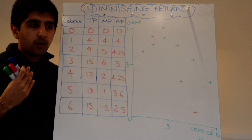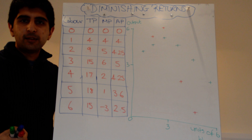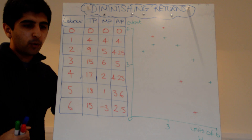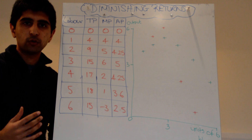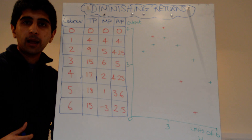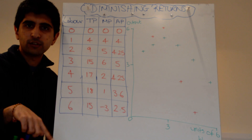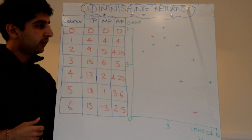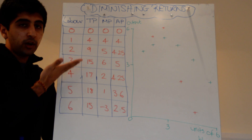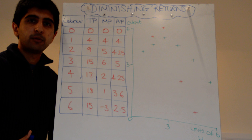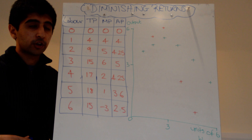We had a model firm that specialised in making paper aeroplanes. We had one table and three chairs — that was our fixed capital. We had fixed land, which was just the space around the table. And what we did was vary our variable factor, labour, keeping adding workers to try and increase the number of paper aeroplanes made.